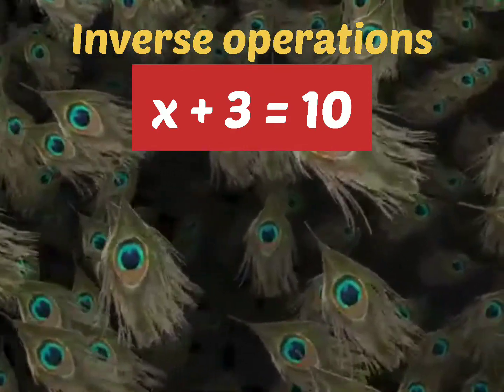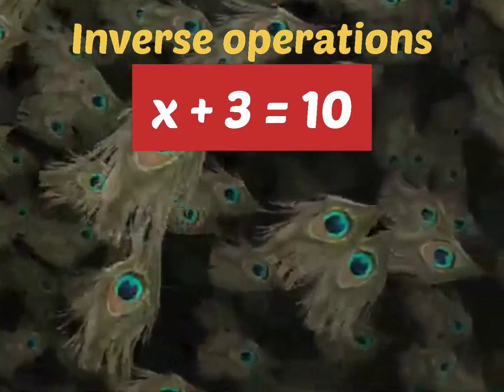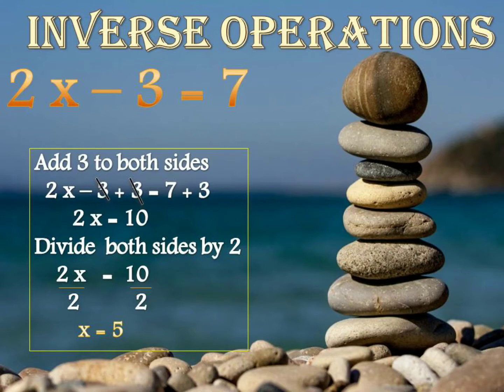Now let us see how this concept helps in solving the equation. Here the equation is 2x minus 3 is equal to 7. While solving the equation, we have to keep the variable x on the left hand side. We have to eliminate 3, so we add 3 on both sides. The 3 cancels on the left hand side and we get 2x is equal to 10. Now we have to eliminate 2, so we divide both sides by 2. The 2 cancels on the left hand side and 10 divided by 2 gives us x is equal to 5.